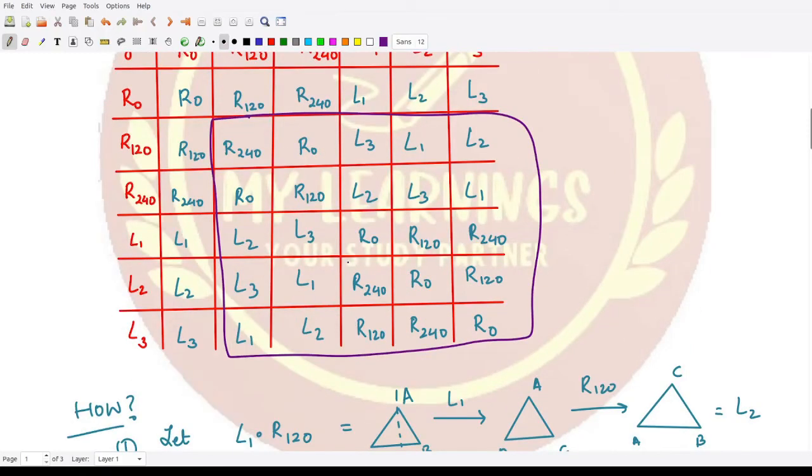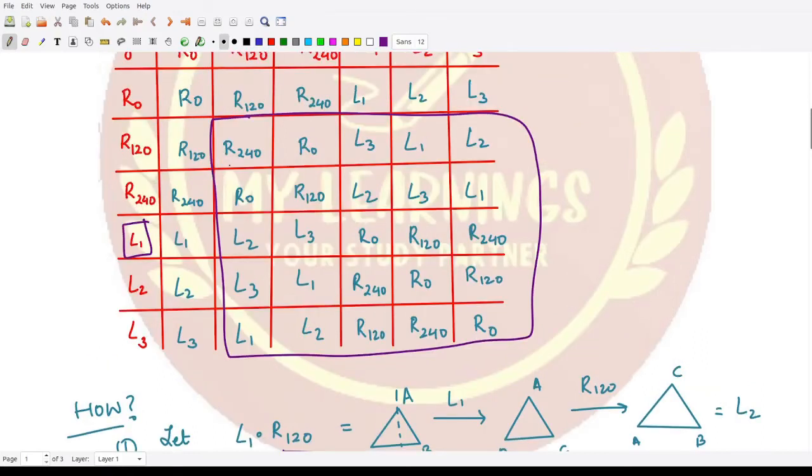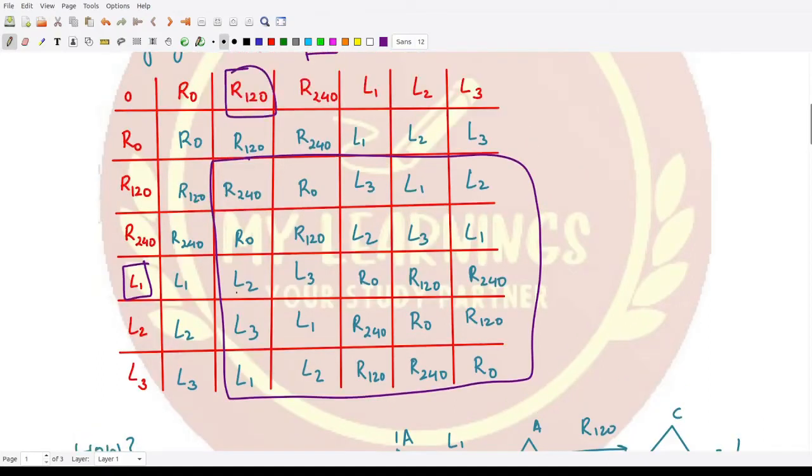For example, I have taken L1 composition with R120. We need to look at what would come at this place in the table. This is our aim, so let's see what we can fill here.